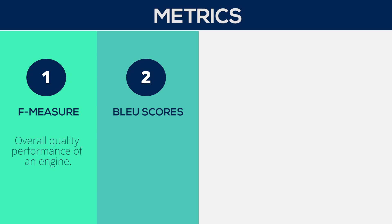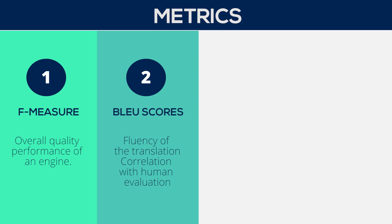BLEU scores track and analyse the engine to evaluate the fluency of translation being produced. As human evaluation is more time-consuming, this method helps to establish the fluency of translation and how closely the translation correlates with human evaluation. More directly, it measures how many words overlap in a given translation when compared to a reference translation. The higher the score, the closer it correlates with human evaluation.